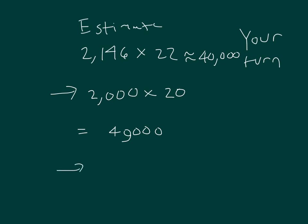For instance, you might have gone 2,200 times 20, which would have been 44,000 as an estimate.